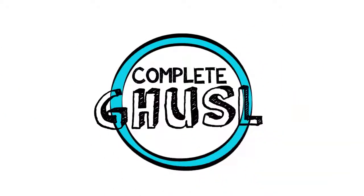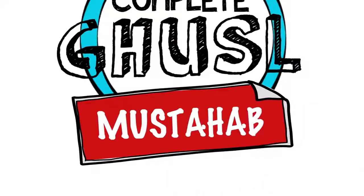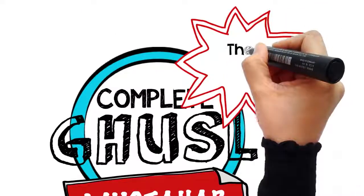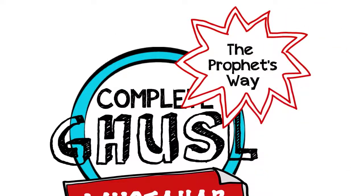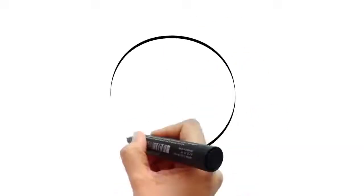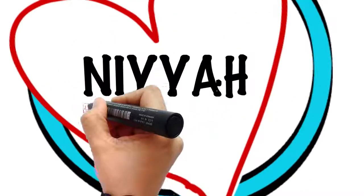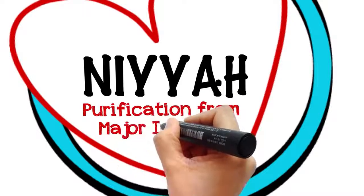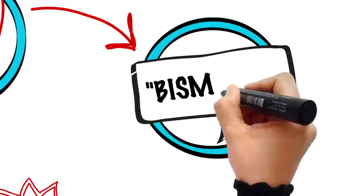As for the complete Ghusl, this is the Mustahhab one, and it is how the Prophet Sallallahu Alaihi Wasallam took a bath. This is how you do it: Begin with an intention to purify yourself from the major impurity, then say Bismillah.